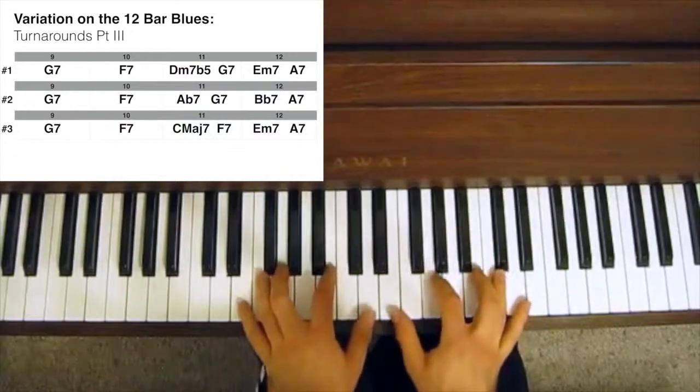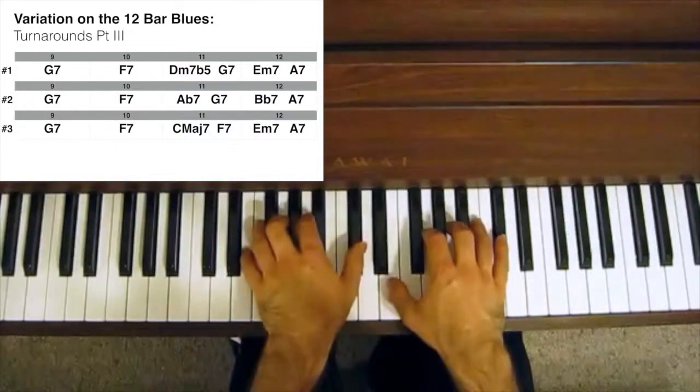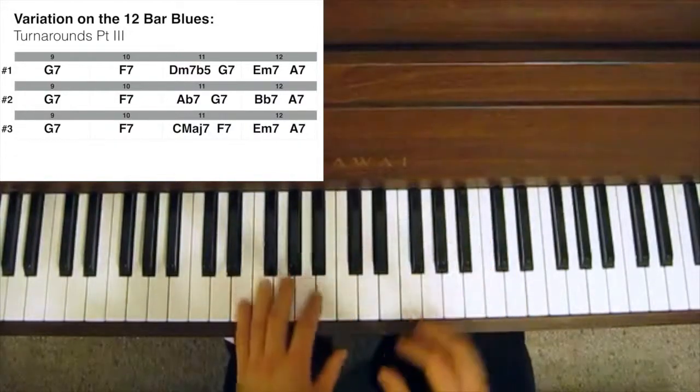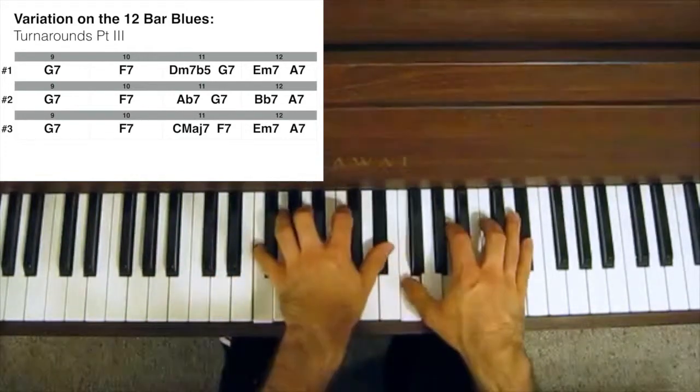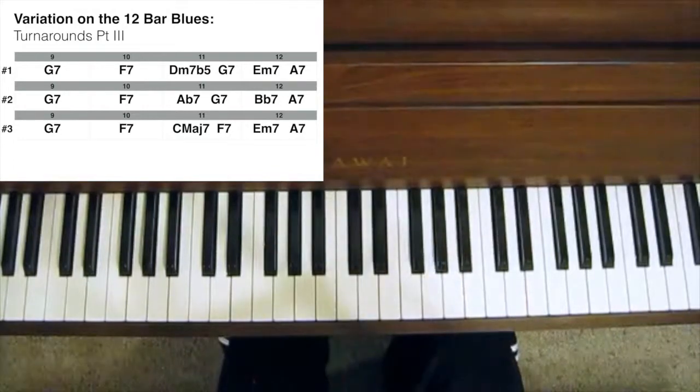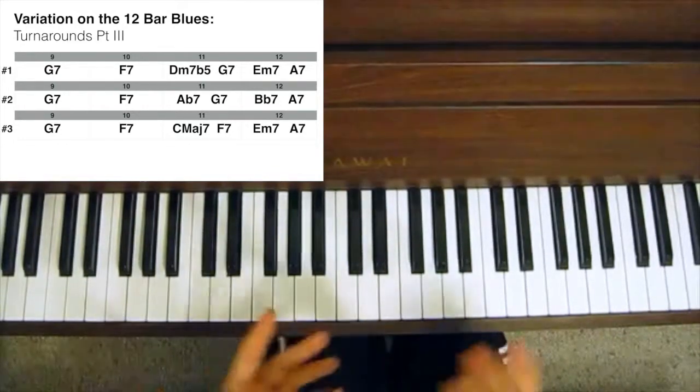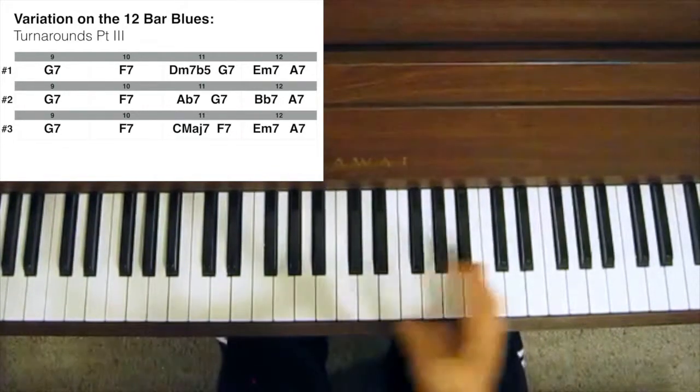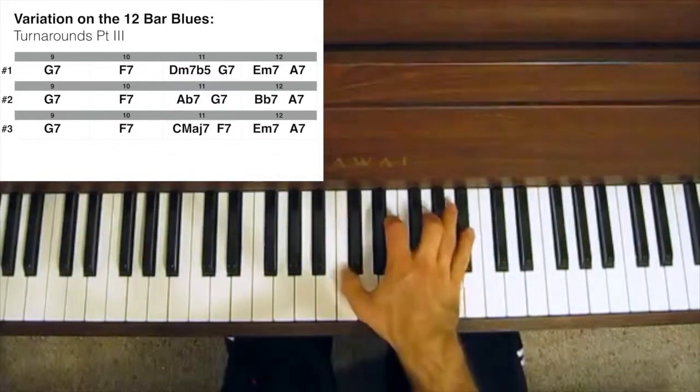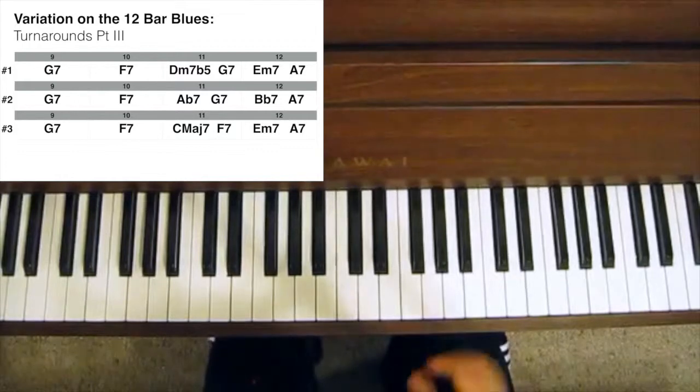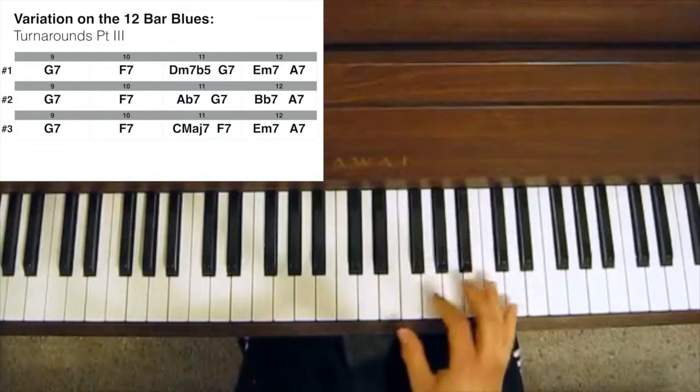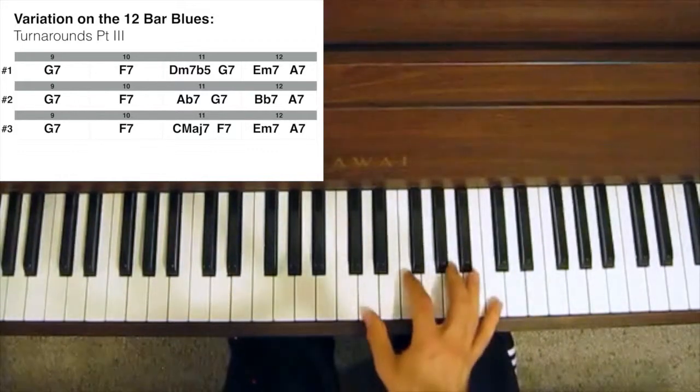So that last pass is the same. You're still going Em7 to A7 at the end, but instead of playing the 2-5, you're playing a 1-4. Now that is a bit different. You can sort of think about it as the 1's the 1. You can play a Major7 or a Dominant7 if you like. I played the Major7 that time. But the 4 chord is, in a sense, a substitute for the 2.